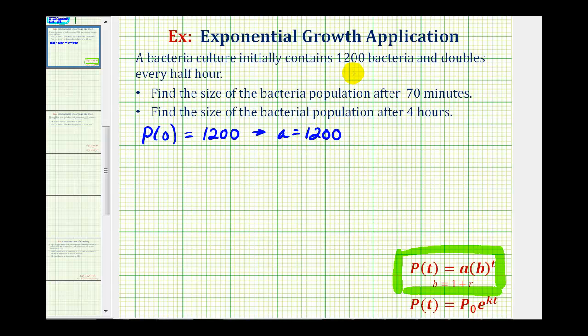We're also told that the bacteria doubles every half an hour. One consideration is that the time here is given in hours, but then we're asked to find the population size in minutes and then again in hours. So I think we'll write a function in terms of t, where t equals the number of minutes. If the culture doubles every half an hour, half an hour equals 30 minutes, so P(30) would have to equal two times the initial amount, or two times a, which in this case would be 2,400. So from this information, we should be able to figure out our exponential function.